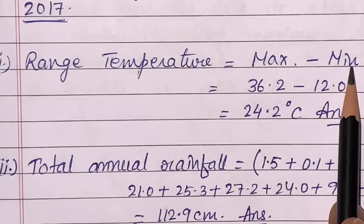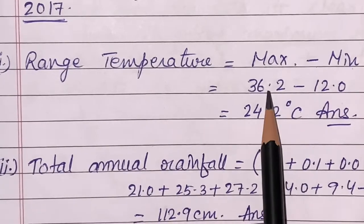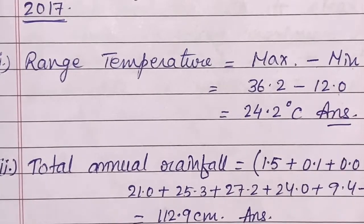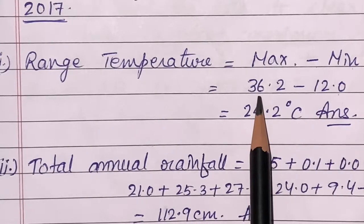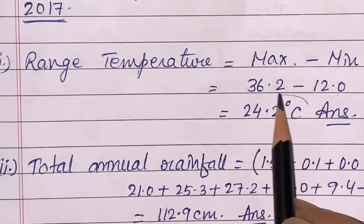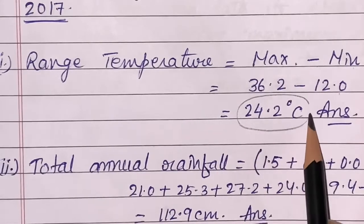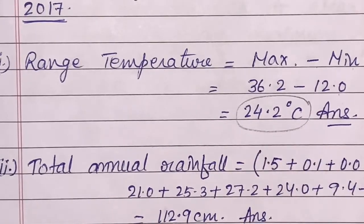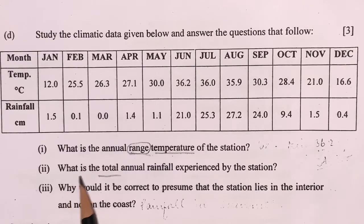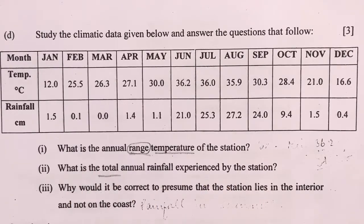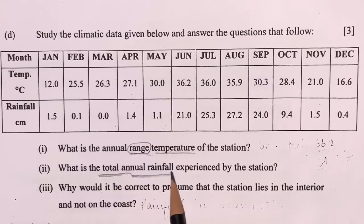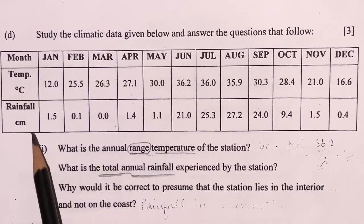Then I put the values from the given data, and after subtracting I got the answer: 24.2 degrees C. Question number 2 is: what is the total annual rainfall experienced by the station? It's very simple because here you have to calculate total annual rainfall, which means you have to add up all the values of rainfall to get the answer.